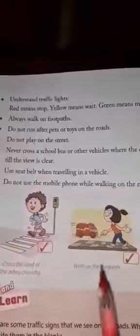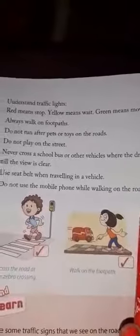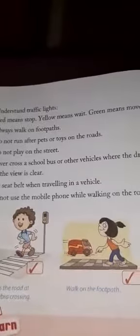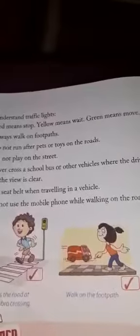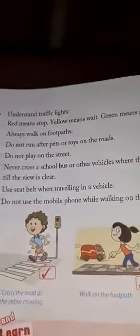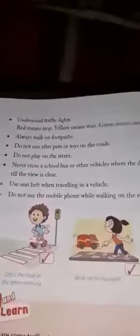Use a seat belt when traveling in a vehicle — in a car, always use the seat belt. Do not use a mobile phone while walking on the road; it is better not to use your mobile when you are outside your house, especially when walking or driving. Okay students, this is part one of your social studies chapter number six. Thank you.